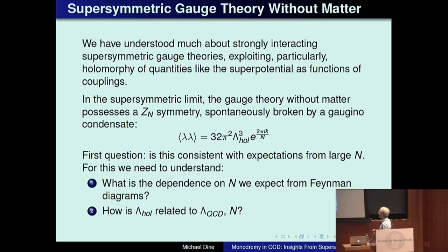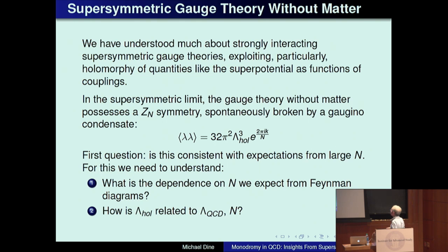Let me talk first about supersymmetric gauge theories without matter. This takes us back to things Nati and I did in the early 80s, followed by the spectacular work he did in the 1990s. We've understood much about strongly interacting supersymmetric gauge theories, especially exploiting the holomorphy of quantities like the superpotential as functions of the gauge couplings. In the supersymmetric limit, the gauge theory without matter possesses a Z_N symmetry — a discrete symmetry which is spontaneously broken by a gaugino condensate.